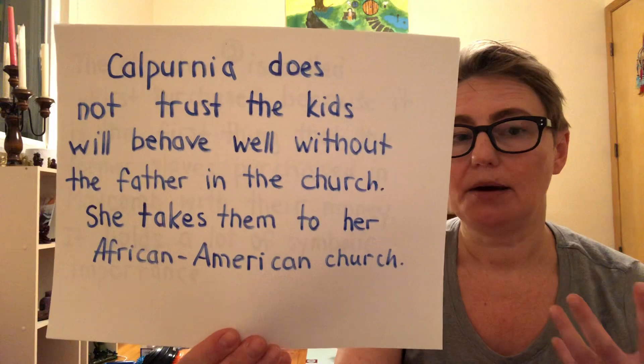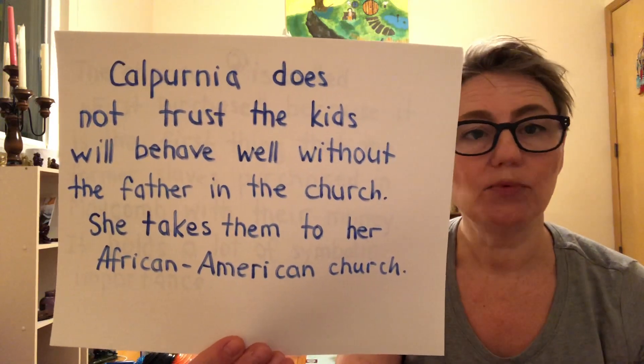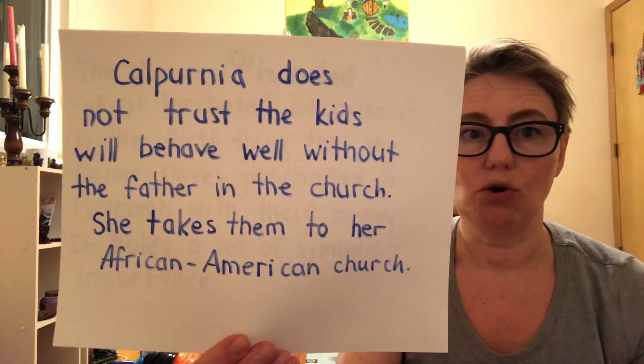At that moment there is also a Sunday coming up, and Calpurnia doesn't want them to stay at home. Usually on Sundays they go to church, so she wants to take them to her own church. Her church at that time was only for black people, and the kids were white — so white people were not really welcomed there. It was not a tradition at that time for white folks to go to a black church, so she is making almost like a revolution.